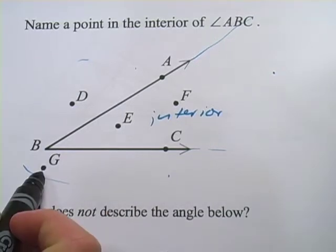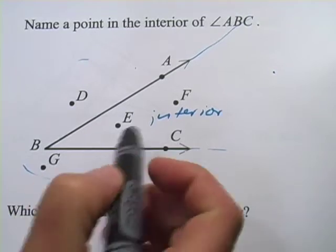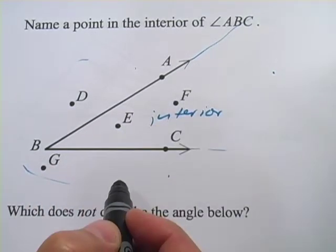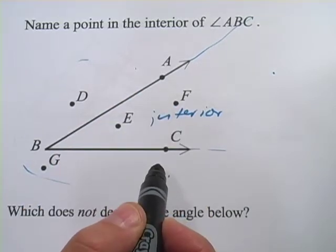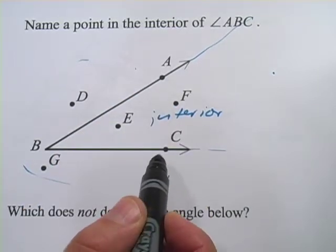So points G and D are on the exterior of the angle. Point E and F are on the interior. And then of course points B, C, and A, well they're on the angle, so they're neither on the interior nor the exterior.